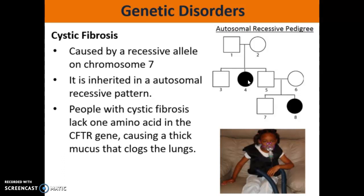People with Cystic Fibrosis are actually just missing one amino acid in what's called the CFTR gene. It seems like a relatively minor mutation, but it has big consequences because it causes thick mucus to coat the person's lungs. They often have to receive some type of inhaled medication — we see this little girl right here getting her medication to help break up that mucus. Before that medication was around, people would have to constantly pound on their backs to get them to cough up this thick mucus just so that they could breathe.